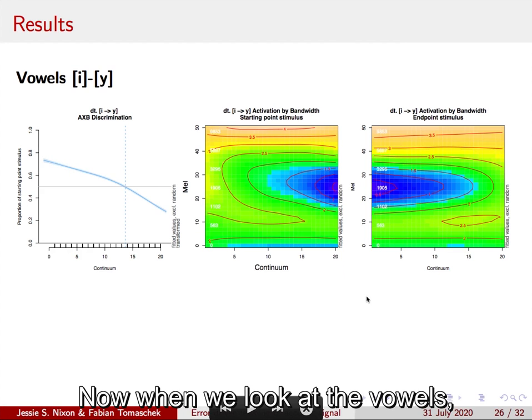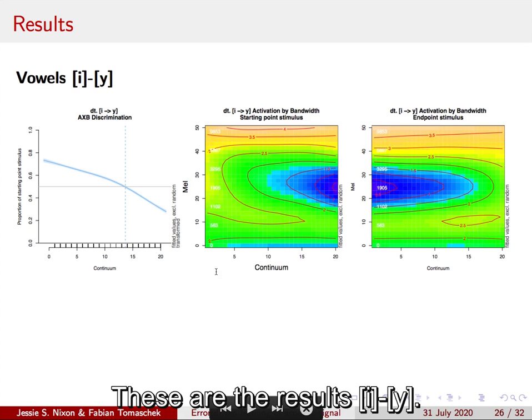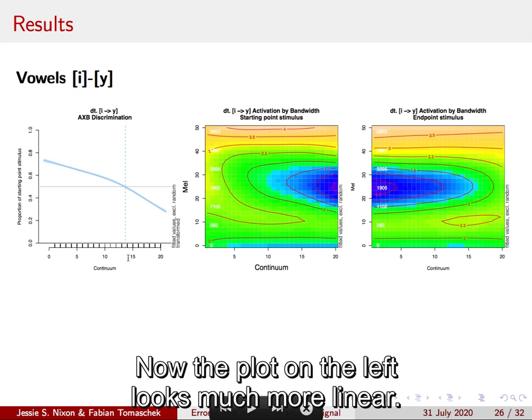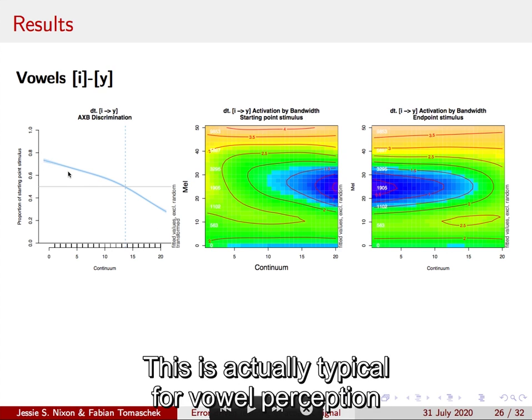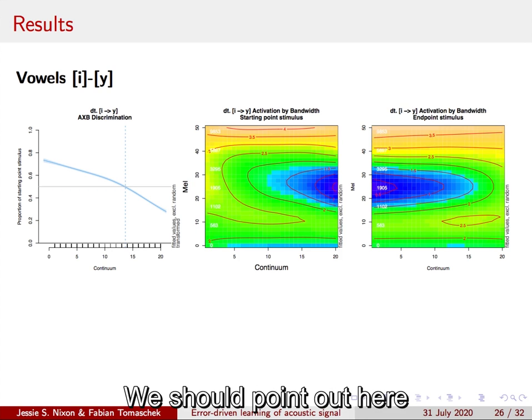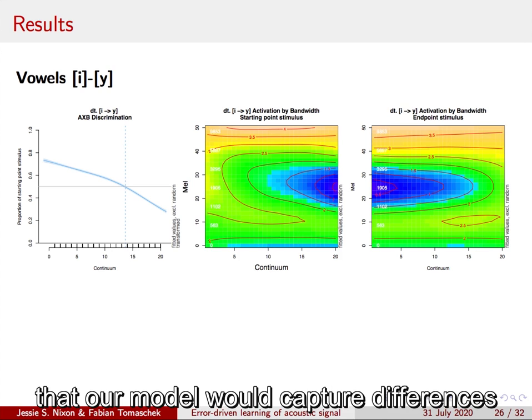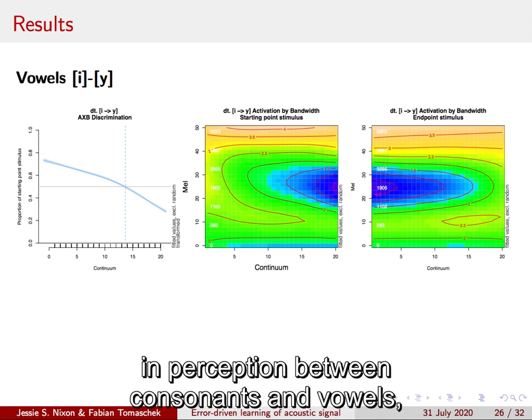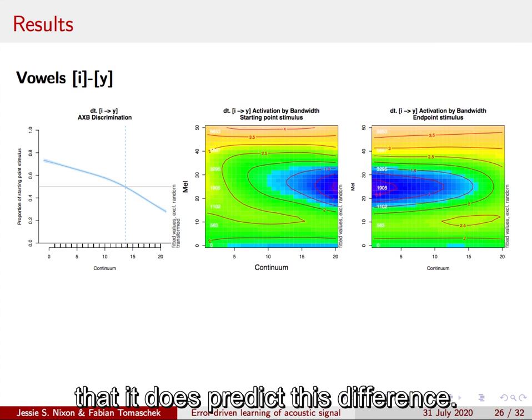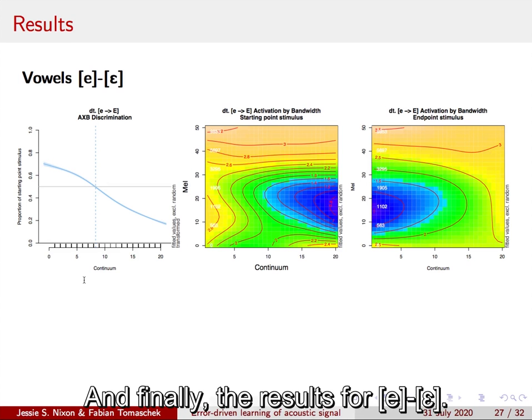Now when we look at the vowels there's an interesting difference. These are the results for i-u. Now the plot on the left looks much more linear. This is actually typical for vowel perception to be more linear than consonant perception. We should point out here that we didn't actually predict in advance that our model would capture differences in perception between consonants and vowels, but we find it interesting that it does predict this difference. And finally the results for i-e.